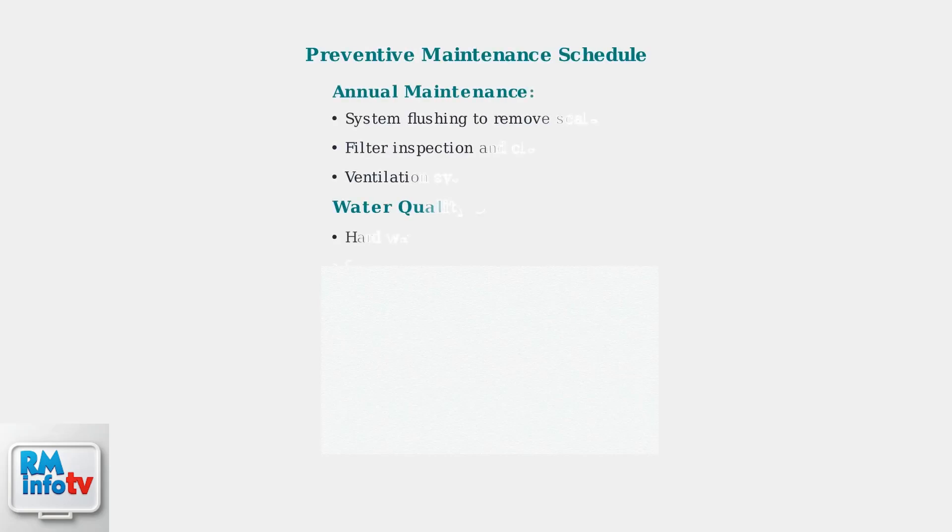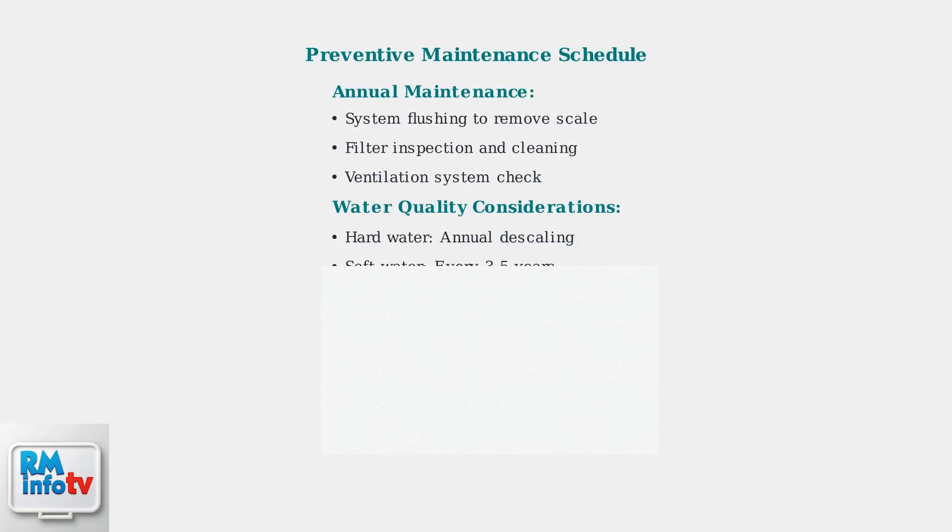Preventive maintenance is crucial for avoiding problems. Flush your system annually to remove scale buildup. In hard water areas, perform this maintenance yearly, while soft water areas can extend this to every three to five years.